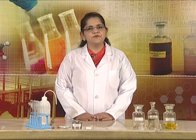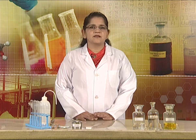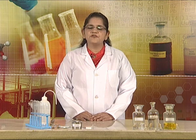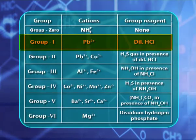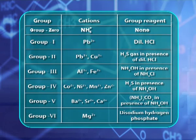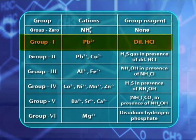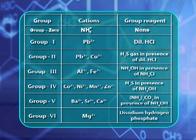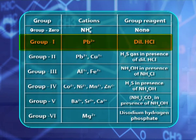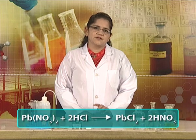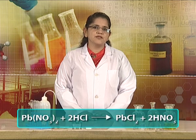After that, confirmatory tests are performed by the reaction of precipitates with different reagents. The group reagent for group 1 cation is dilute HCl. When it is added to the original solution of the salt of lead, a white precipitate of lead chloride is formed. Refer to the screen for the equation.